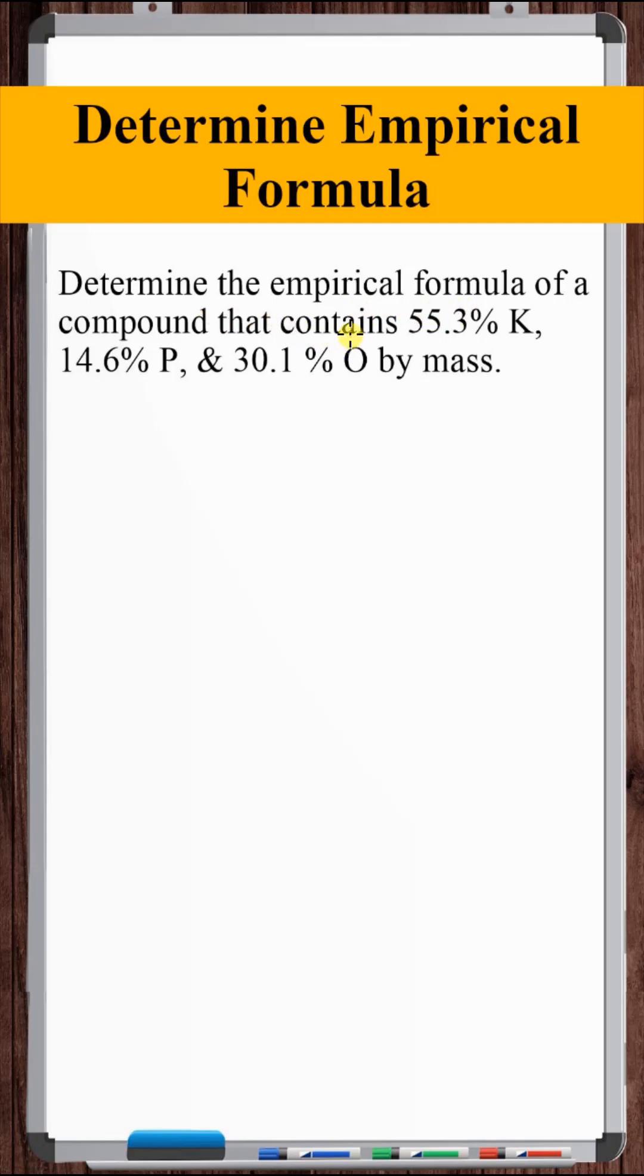Determine the empirical formula of a compound that contains these percentages of potassium, phosphorus, and oxygen by mass.